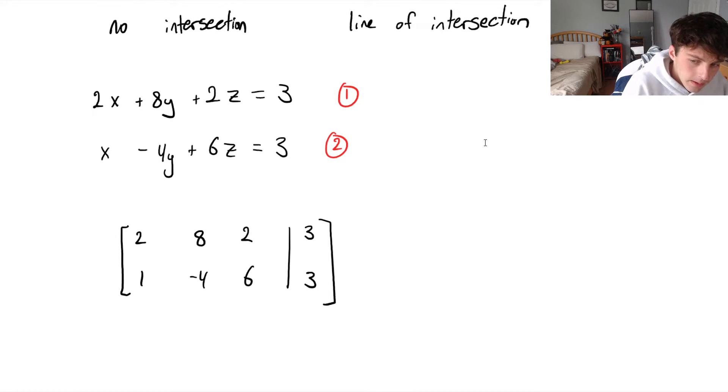And then we're going to row reduce this. So we can fairly simply row reduce this. First of all, let's divide row 1 by 2 because we want that leading entry in the top left to be a 1. So immediately, let's make that 1, 4, 1, and 3 over 2. 1, negative 4, 6, 3. Our second row remains unchanged.